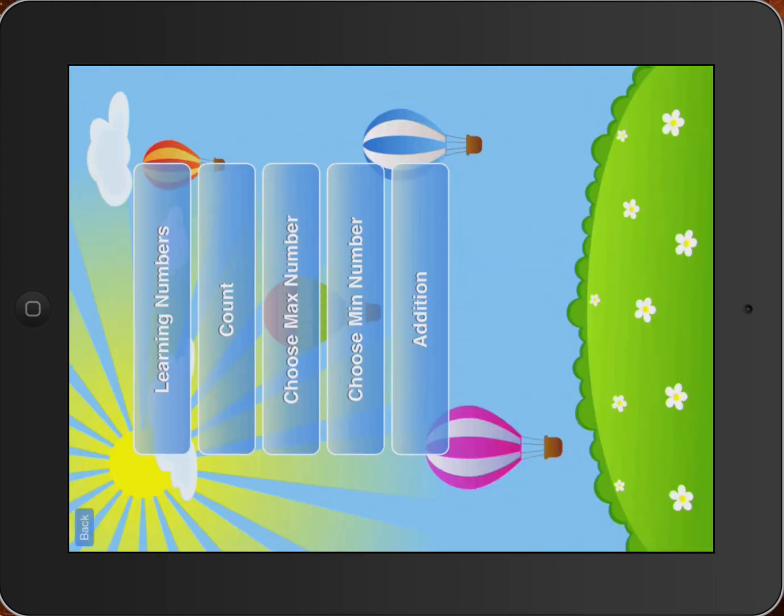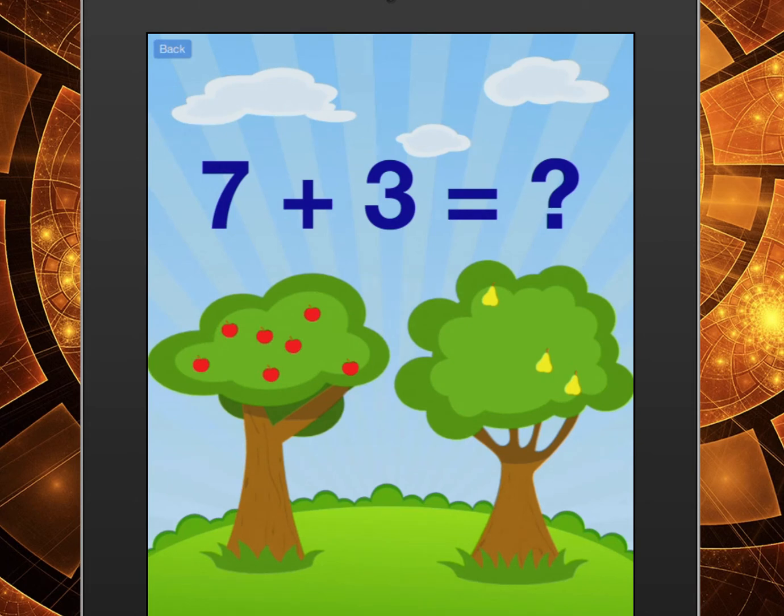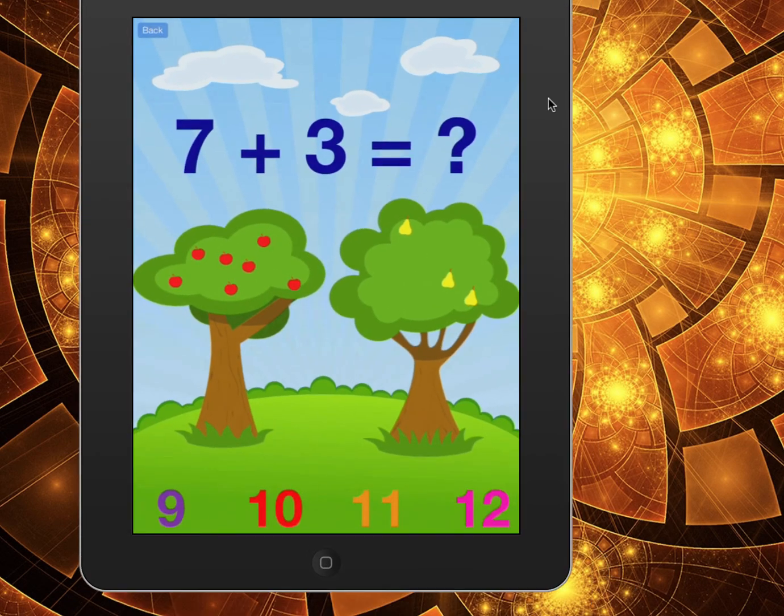And then last but not least, we have an addition portion. And the addition portion switches it to portrait mode over the landscape mode. So your students will have to maneuver their iPads. But notice that there's essentially just some apples and pears on the tree. They're going to count those apples and pears on each tree, add them up, and get the correct answer. Let me put the entire iPad in the screen there so you can see that.